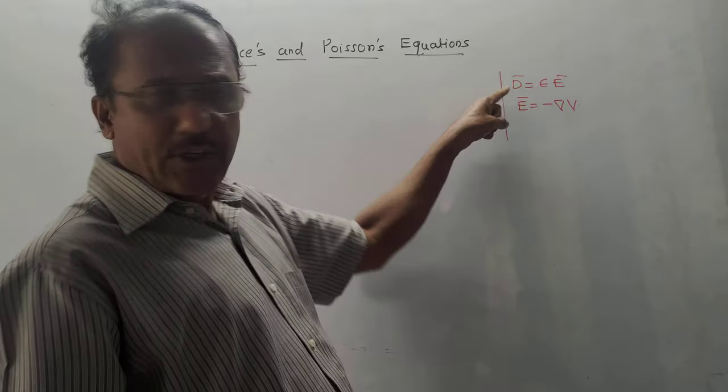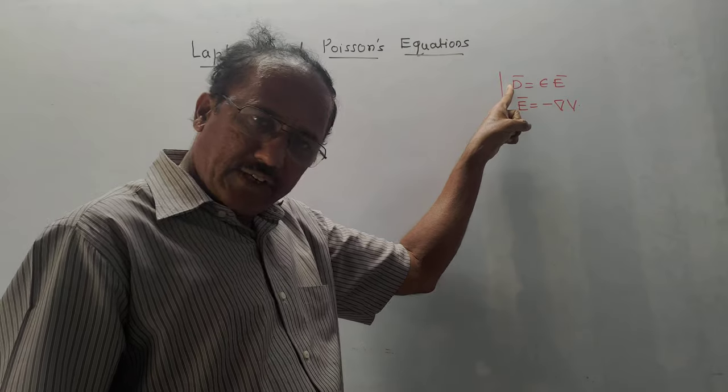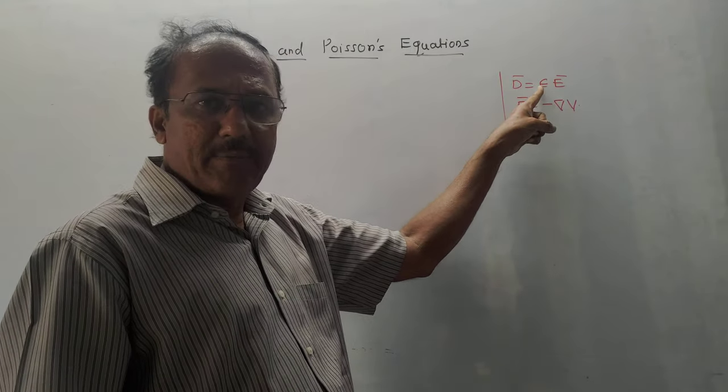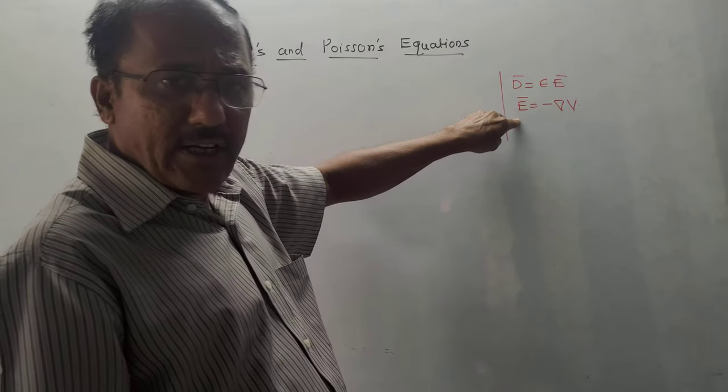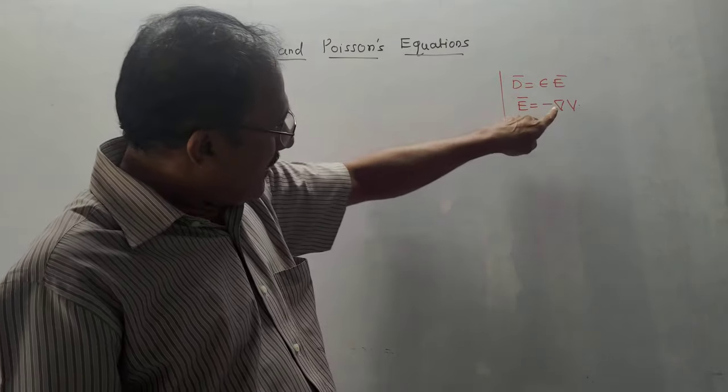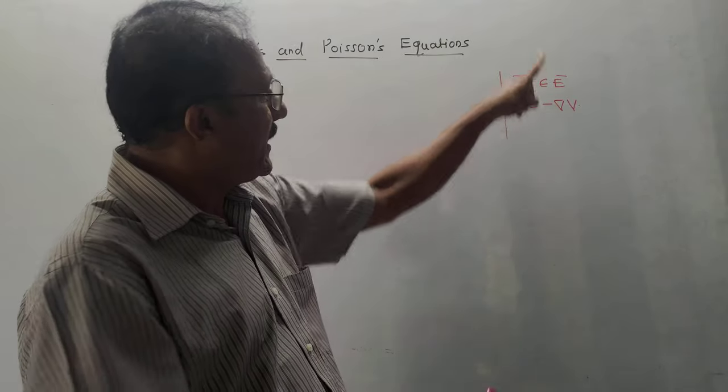We need two basic formulas. First, D̄ = εĒ, where D̄ is electric flux density, Ē is electric field intensity, and ε is permittivity. Second, Ē = -∇V, where ∇V is the gradient of potential.